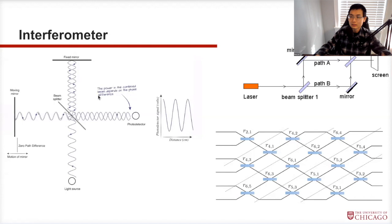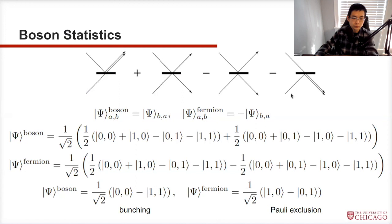However, that in itself is not that interesting, because we can describe light purely classically as waves governed by Maxwell's equations — no quantum mechanics required. That also wouldn't be called boson sampling; it's just an interferometer. So what is so bosonic about light? To understand that, we need a little review of boson statistics.